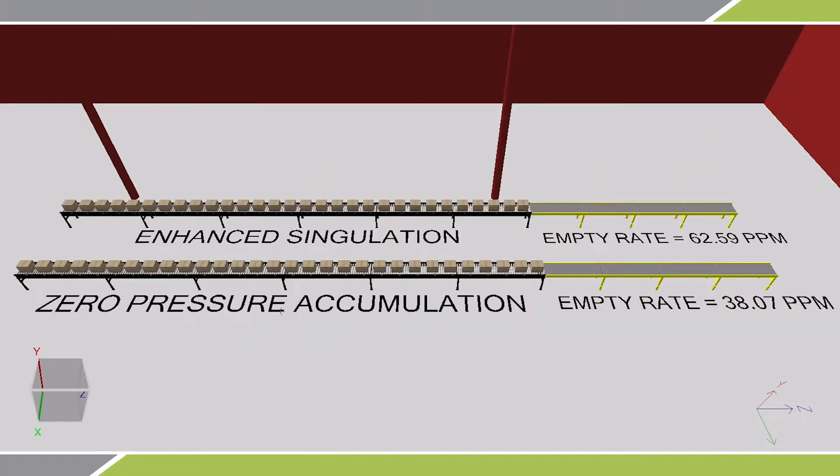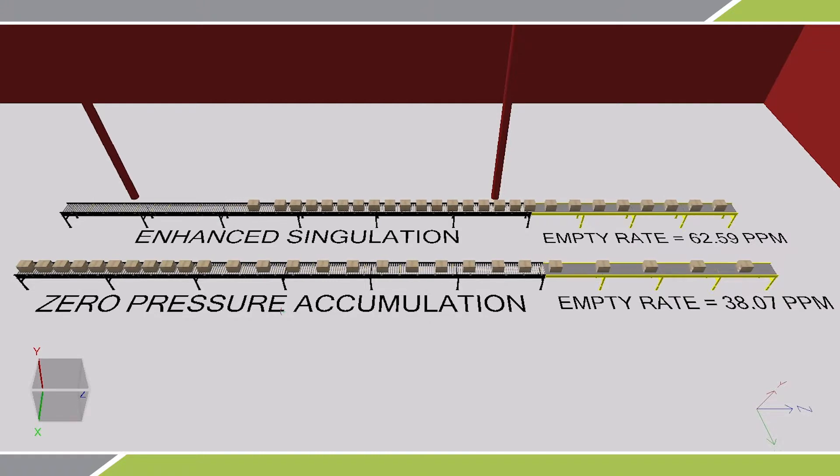When the conveyor lines are released, enhanced singulation or slug release energizes all zones simultaneously, whereas ZPA waits for the downstream zone photo eye to be clear of product before energizing.